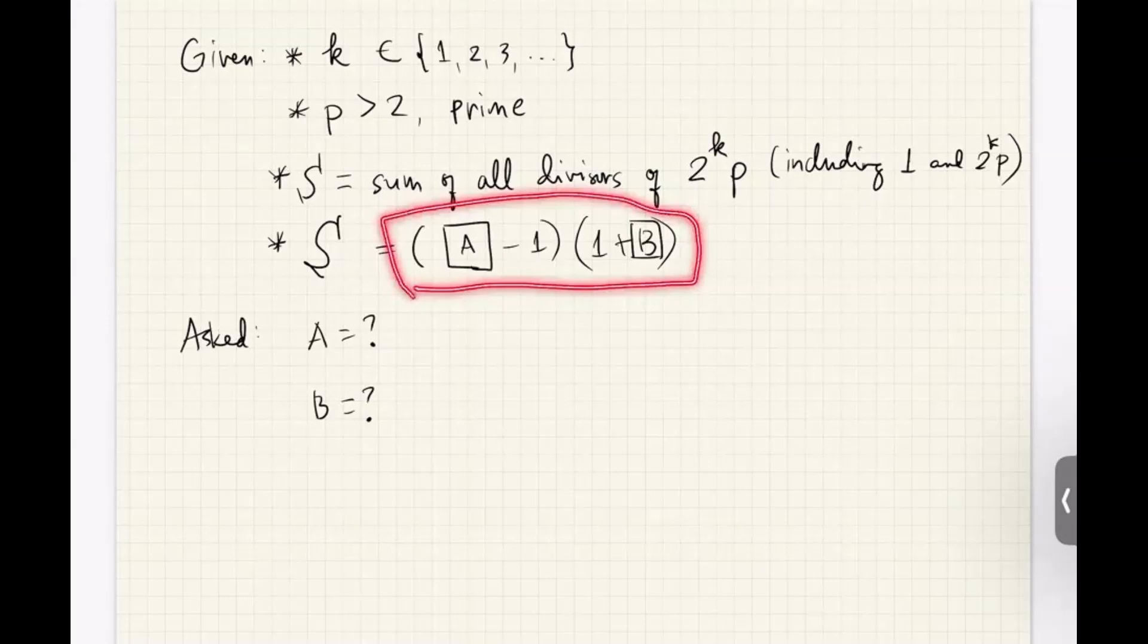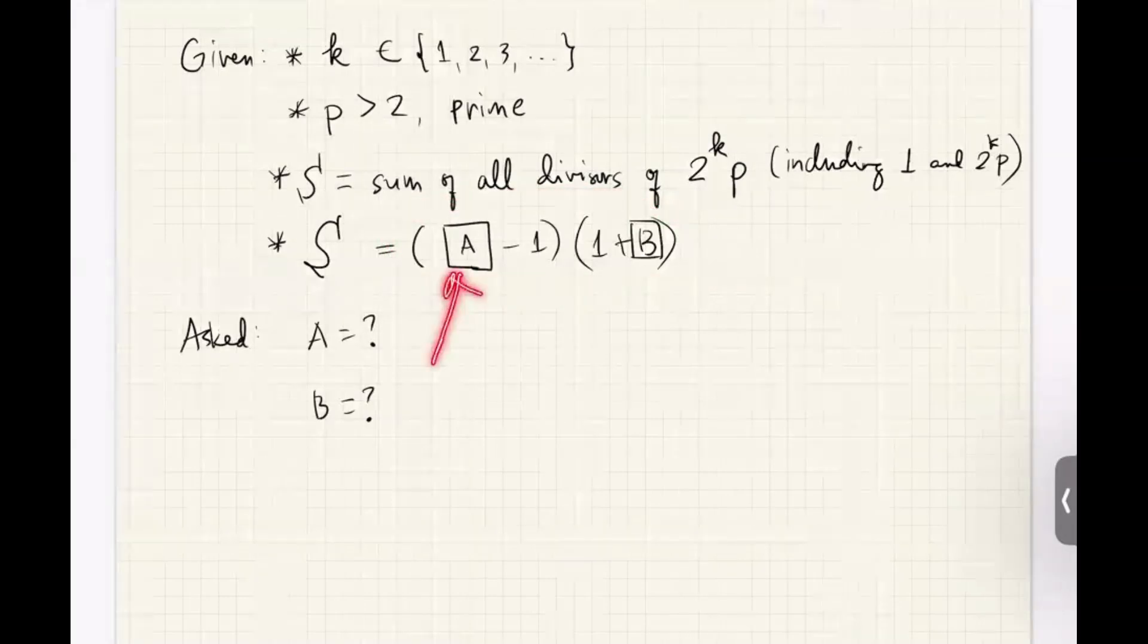Now, we're only interested in the first part of this and the second part of this number. So the sum of all the factors of 2 to the k times b, the sum of all those can be expressed as a product of this number here, sum number a minus 1, and this number here, 1 plus sum number b.